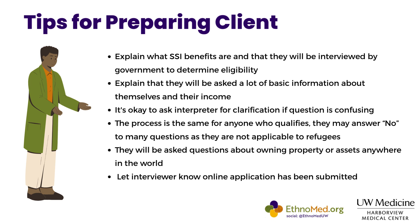Making sure clients know this is a government entity and that they're going to be asked a lot of questions to determine eligibility can help with the apprehension that clients may face in having this interview. You can also explain that they're going to be asked a lot of basic information about themselves, their income and their health, and that they should answer as honestly as possible. One example is a client who didn't know her date of marriage — it's okay for her to say exactly that to the adjudicator. I also try to let clients know that some questions might be confusing, and it's okay to ask for clarification from the interpreter. If the interpreter doesn't know how to clarify, they will ask the adjudicator to help explain the question in a way the client can understand.